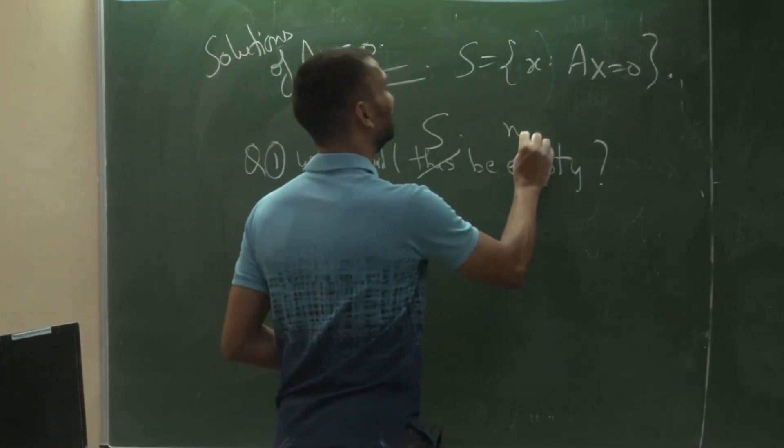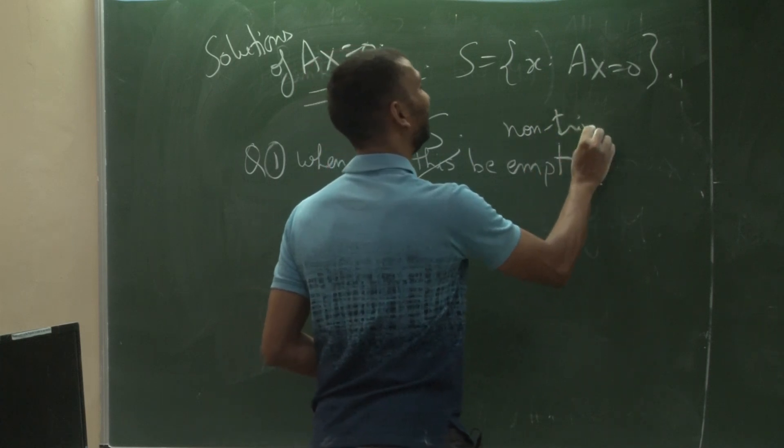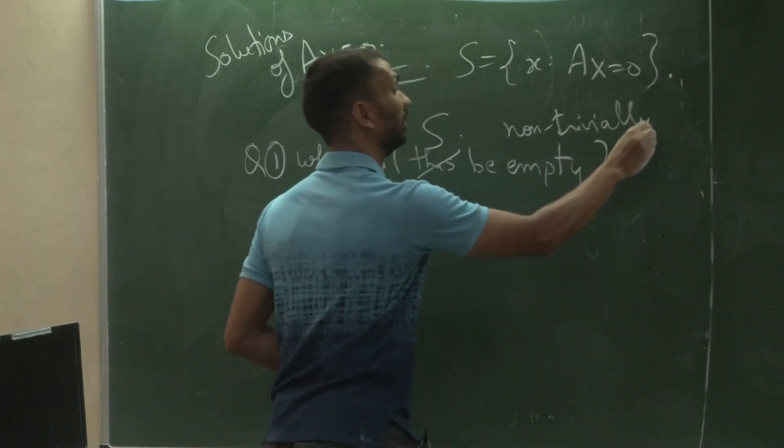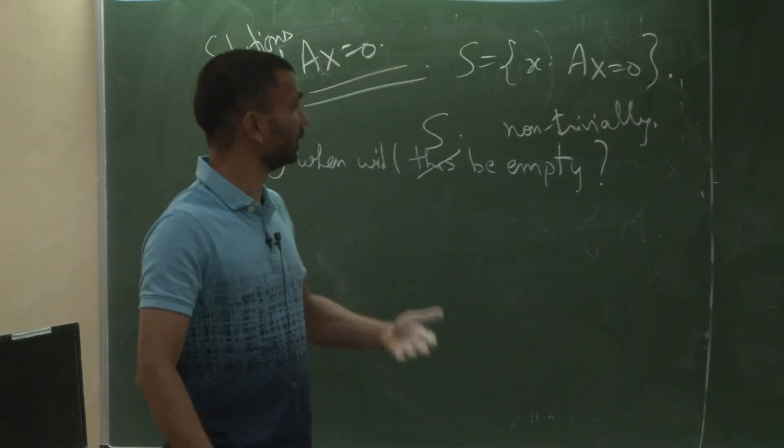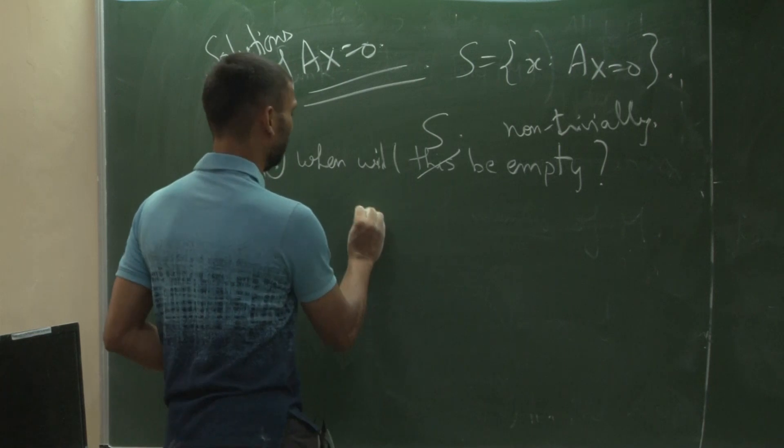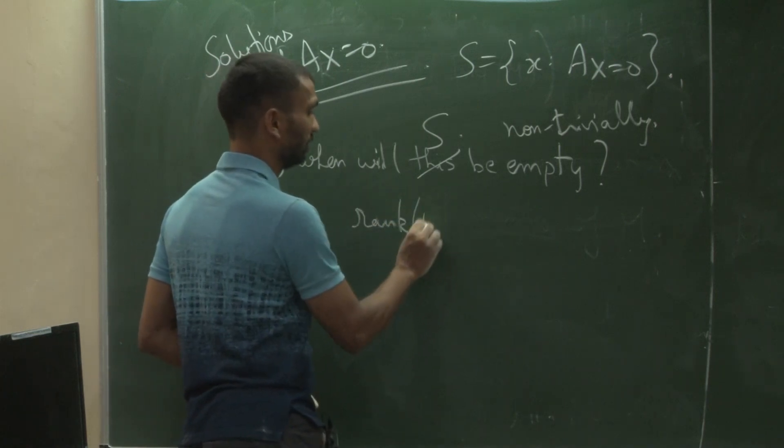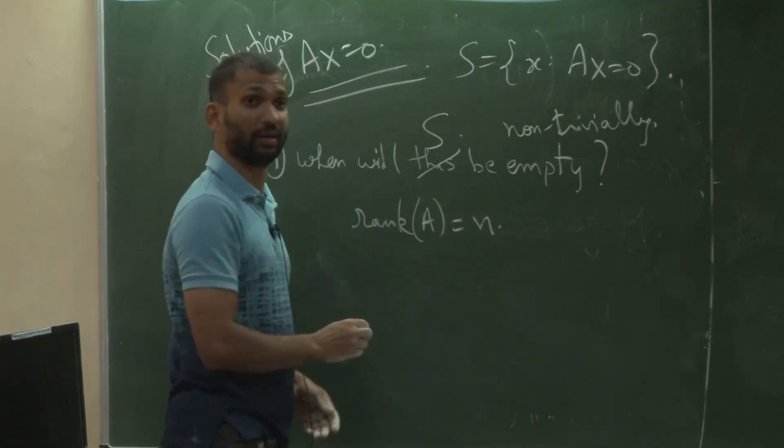Non-trivial empty. Good. So it's never empty because 0 is always there, but when is it non-trivially empty? Similarly, when rank of A is n.